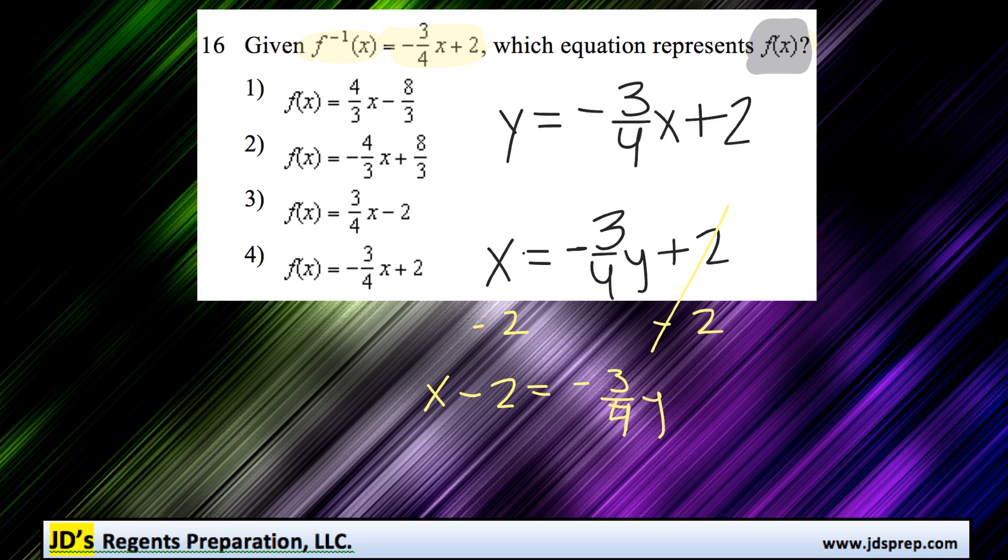To get y by itself, we'll multiply both sides by negative 3 quarters flipped, which would be negative 4 thirds.